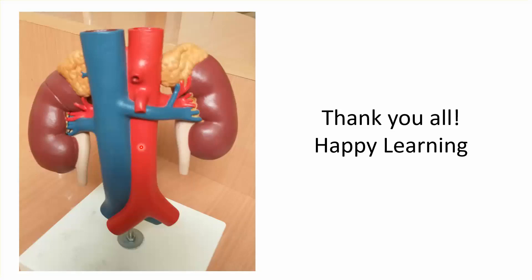The lateral branches include the inferior phrenic going to the diaphragm, the suprarenal branches going to the adrenal gland, the renal arteries going to the kidneys, the gonadal arteries — testicular in males and ovarian in females — and then the lumbar and common iliac arteries. These lateral branches are the paired branches. Thank you all.